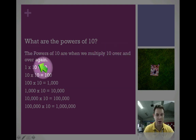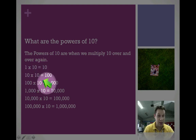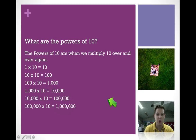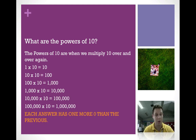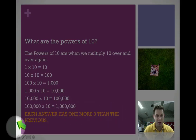1 times 10 equals 10. We take that 10, multiply it by 10, we get 100. 100 times 10 is 1,000. 1,000 times 10 is 10,000, and so on and so forth. What's important to notice when we're multiplying by 10 over and over again is that each answer has one more zero than the previous.